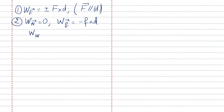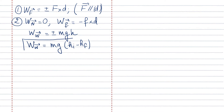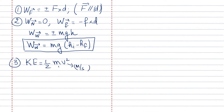Then the work of weight is plus or minus mgh, or you can say work of weight equals mg times (height initial minus height final) — I will use this equation in my solution. Third, kinetic energy is half mv squared, where v is in meters per second and mass is in kilograms. Kinetic energy is always in joules.